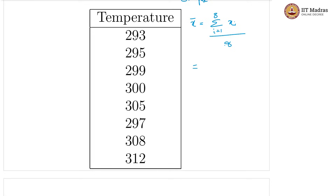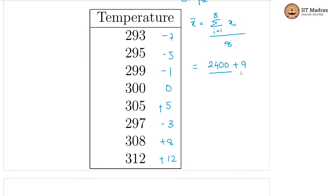Let us see how much each value differs from 300. We have 300 minus 7, 300 minus 5, 300 minus 1, 300 plus 0, 300 plus 5, 300 minus 3, 300 plus 8, and 300 plus 12. There are eight 300s, giving us 2400 plus the sum of the differences. That sum is minus 7 minus 5 minus 1 plus 5 minus 3 plus 8 plus 12, which equals plus 9. So x̄ equals 2409 divided by 8, which is 301.125.